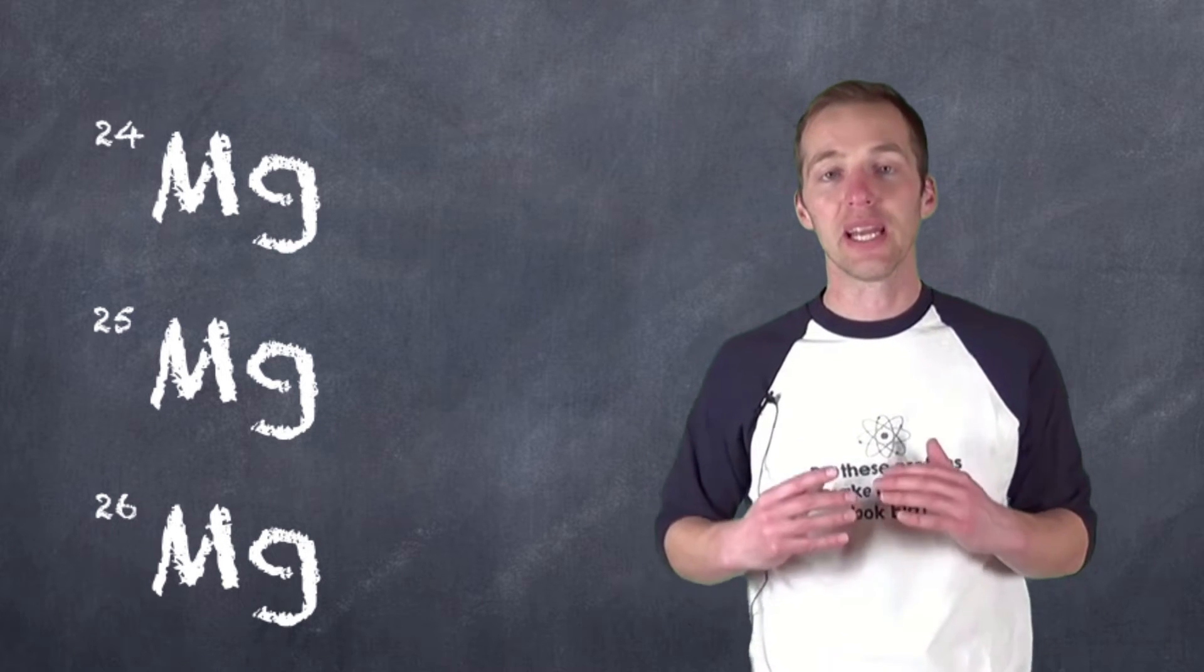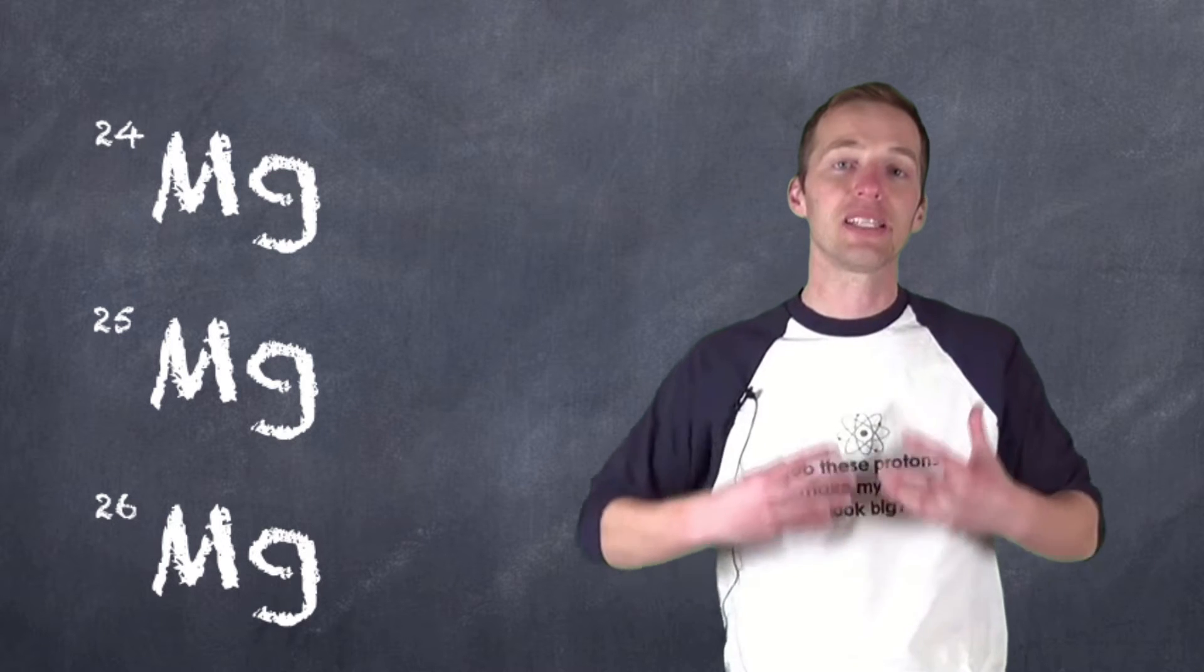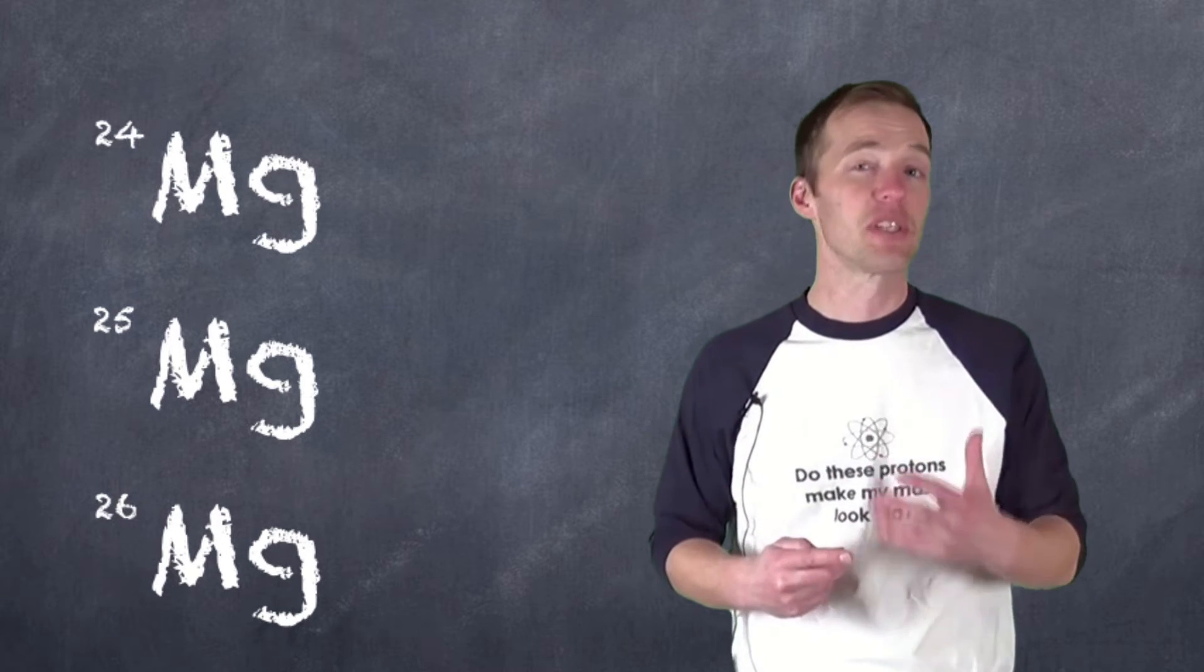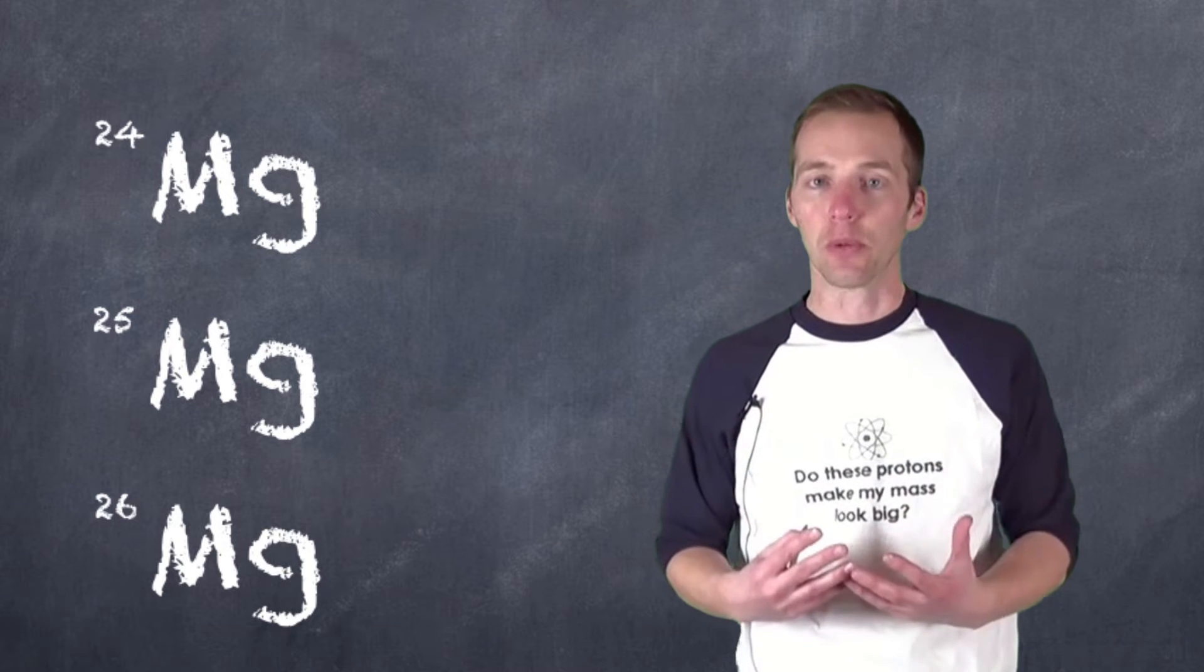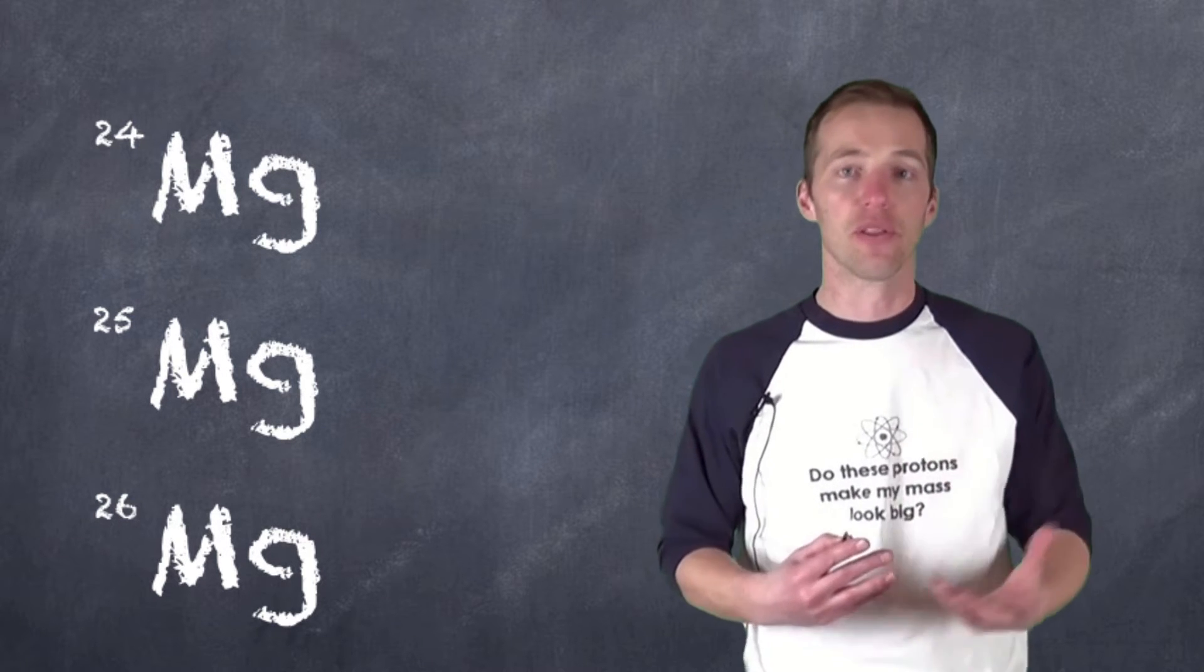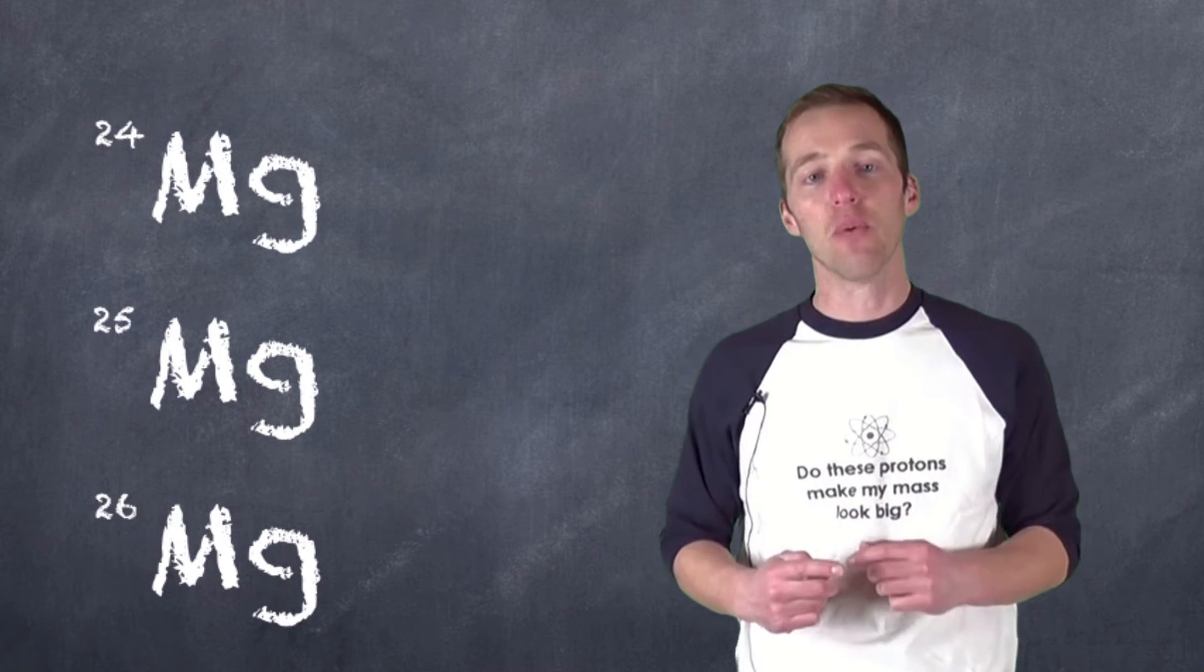Now, these are not equally occurring in nature. That is, their relative abundances, the percentages by which they're found in natural samples, is not equal. If they were, it would be 33%, 33%, and 33%, but it's not found that way.